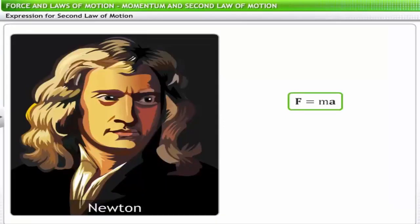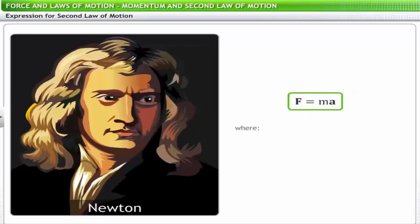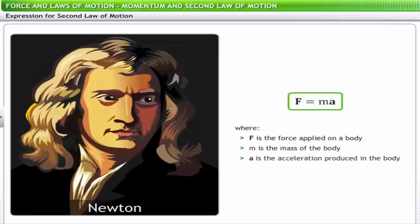Newton's second law of motion can be expressed mathematically as F = ma, where F is the force supplied on a body measured in newton in the SI system and in dyne in the CGS system, m is the mass of the body, and a is the acceleration produced in the body.